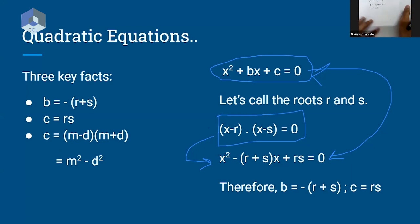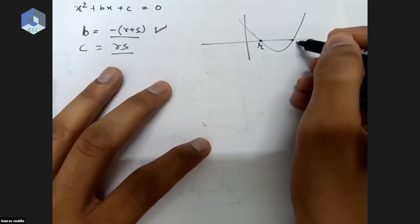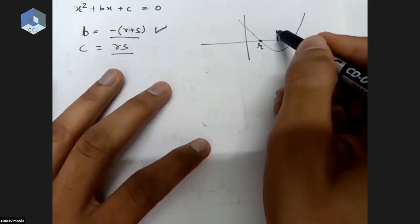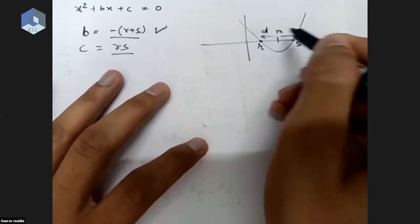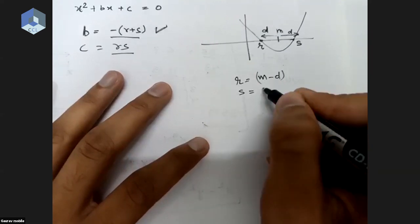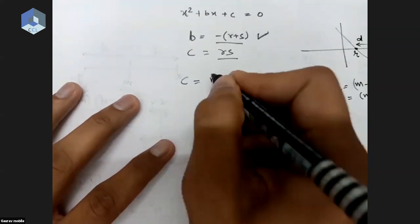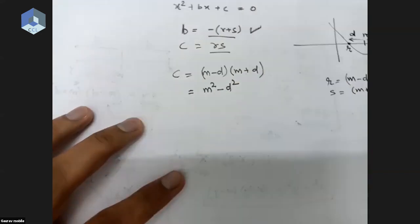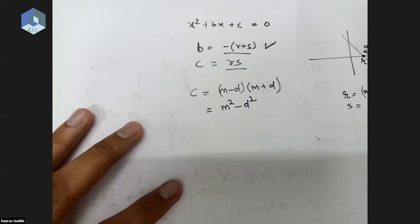So now, if this is my quadratic equation and the two roots are r and s, it is guaranteed that they will have a midpoint, let's call that m. And d is the distance of mean from both these numbers, so r is m minus d and s is m plus d. Therefore we can write c as m minus d into m plus d, which is m square minus d square. We have arrived at this on our own, no formula to remember.